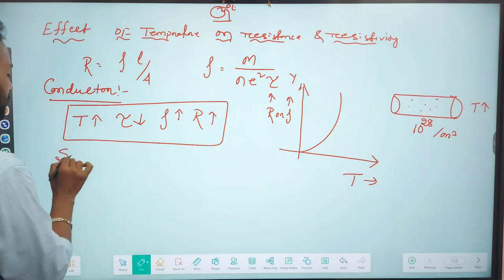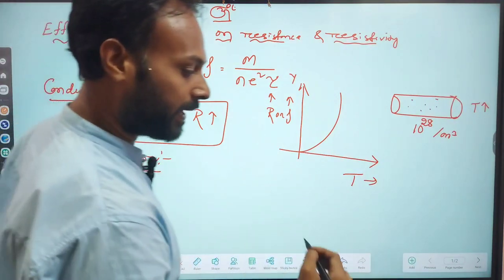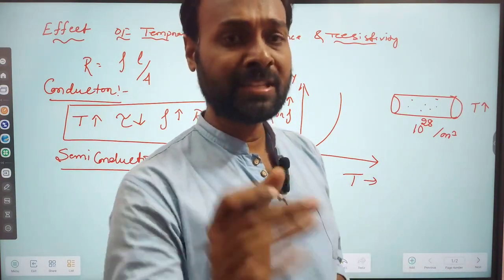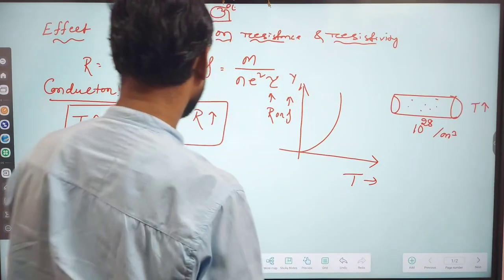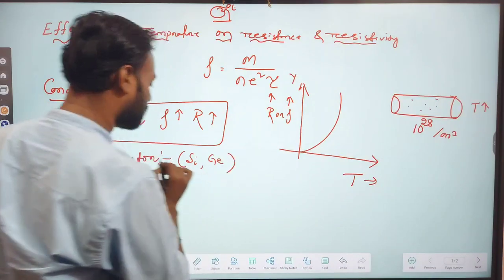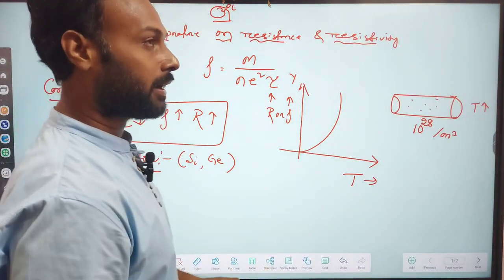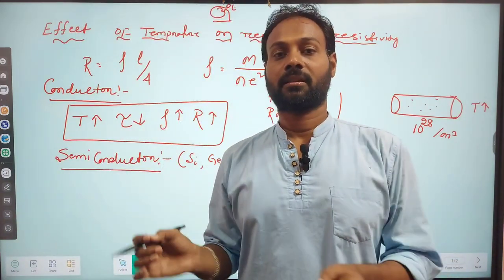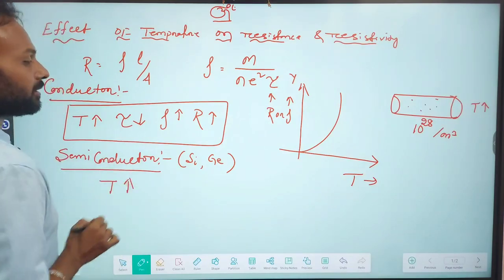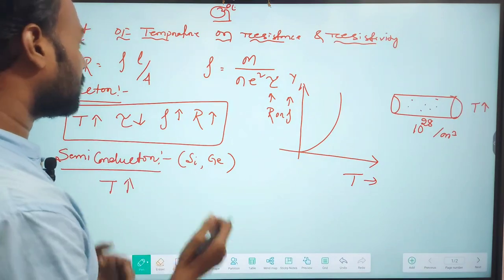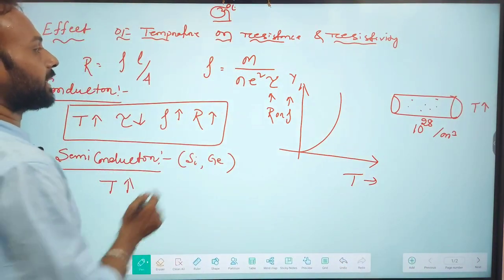Now let us look at the semiconductor case. A semiconductor means it is half conductor and half insulator — those substances that conduct electricity partially behave as semiconductors. For example, silicon and germanium are pure semiconductors. When we increase the temperature of a semiconductor, the resistance and resistivity are affected differently compared to a conductor.